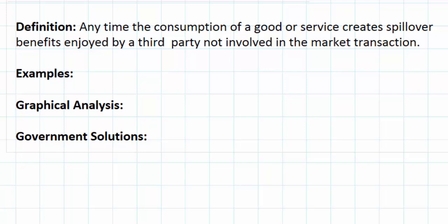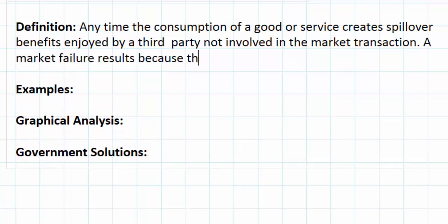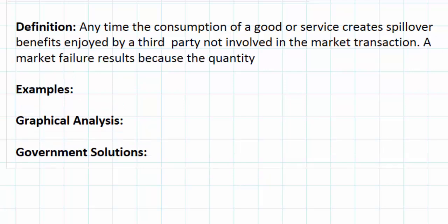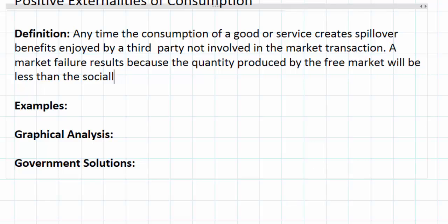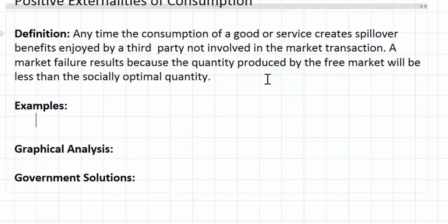This results in a market failure because the quantity produced by the free market of these goods will be less than the socially optimal quantity. Therefore there is a role for government in these markets to increase the quantity produced and consumed of the good in order to achieve a more socially optimal outcome.